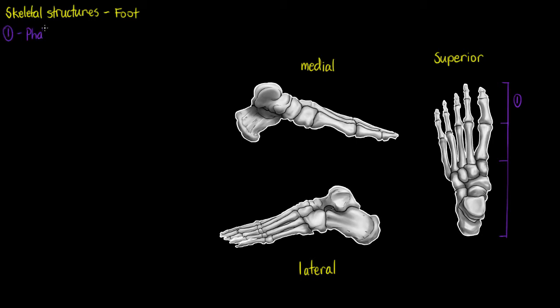So starting with our phalanges, let's have a look at what we've got on our foot. Now the phalanges being our toes, we're going to divide that into three different segments just like we did with our fingers. We have a proximal that I've highlighted in purple here. We also have an intermediate which I'll just highlight in green as well.